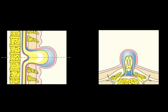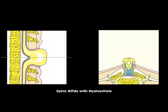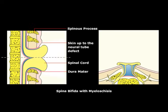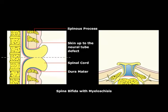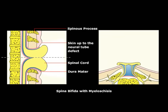In spina bifida with myeloschisis, the spinal cord can be seen externally since the skin does not cover the protruding defect. This is the most severe type and will also cause alpha-fetoprotein levels to be increased during pregnancy.